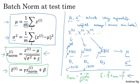But in practice, any reasonable way to estimate the mean and variance of your hidden unit values z should work fine at test time.